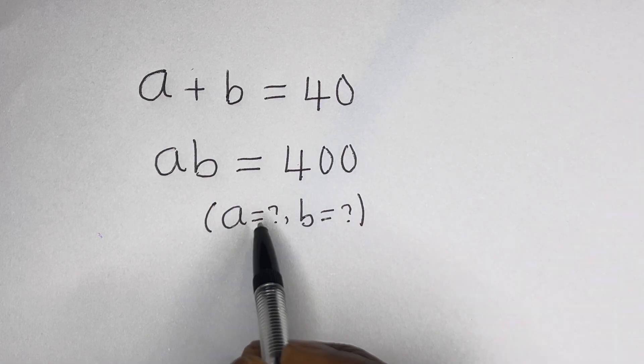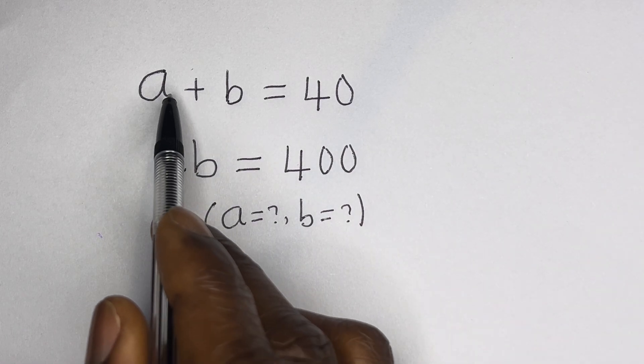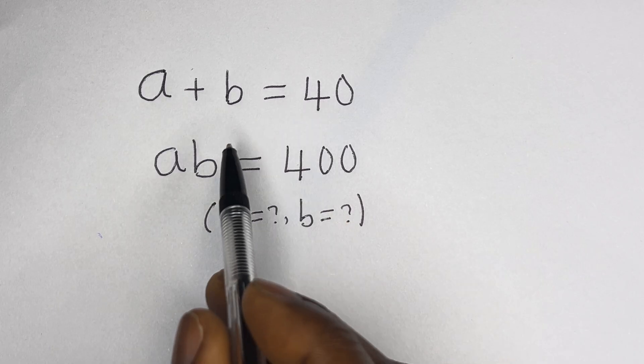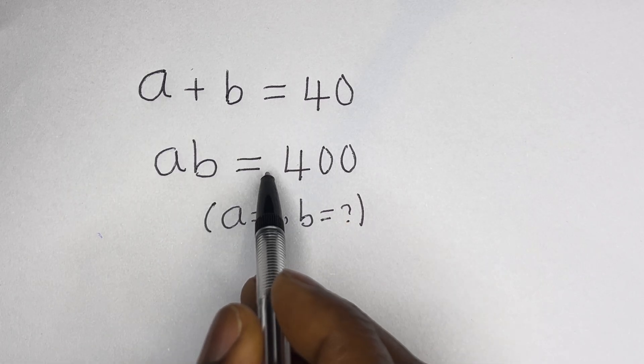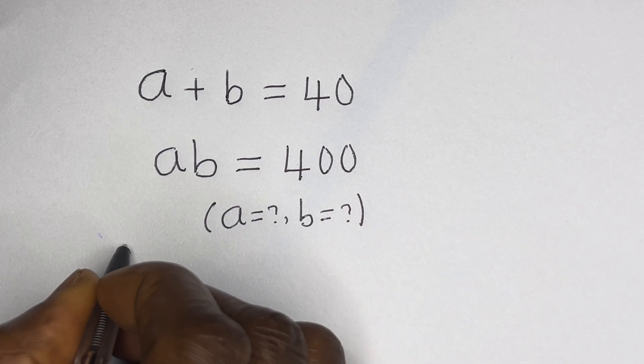Hello. How to solve for A and B in this equation: A plus B is equal to 40, and A times B is equal to 400. Solution.